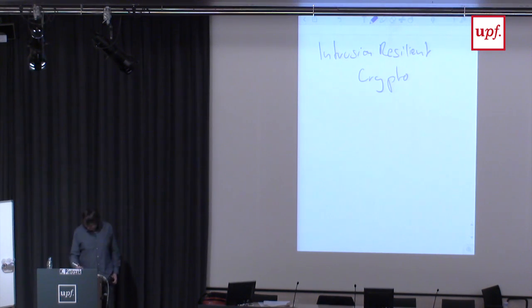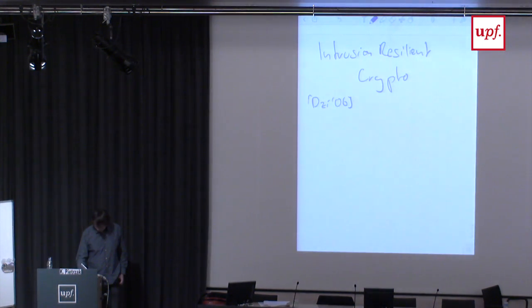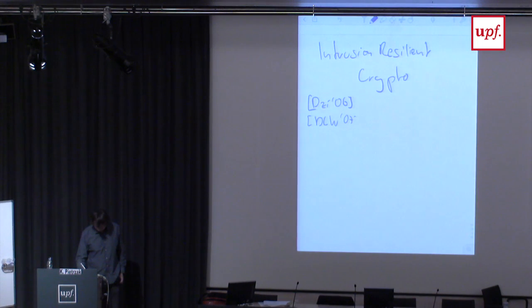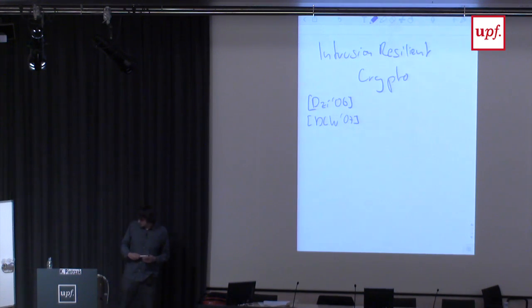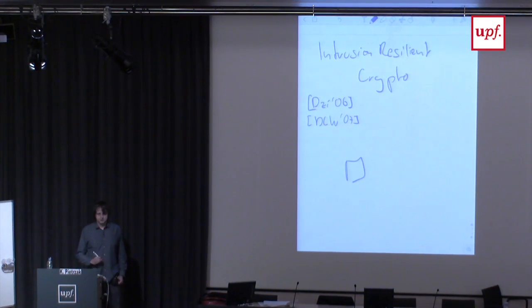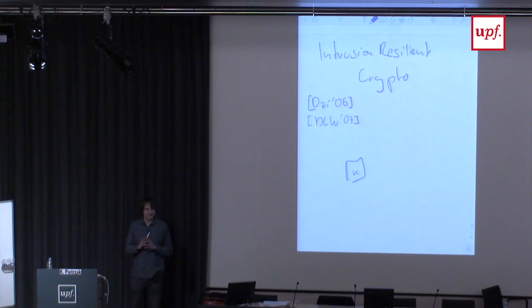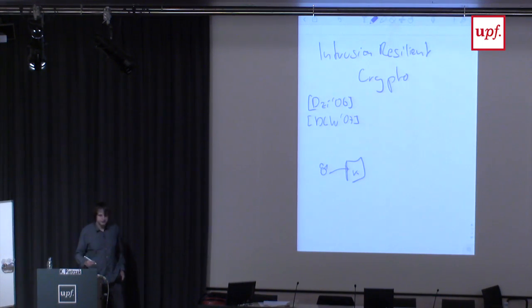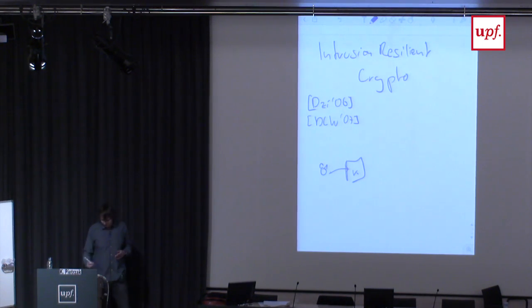This has been introduced independently by Dziembowski at TCC 2006 and by di Crescenzo, Lipton, and Wallfish at TCC one year later. The idea is simple: your device has some short secret, maybe a secret key or a share in a secret sharing. A virus can take your secret key — say 1024 bits — and send it out to the adversary. That's what happens all the time.